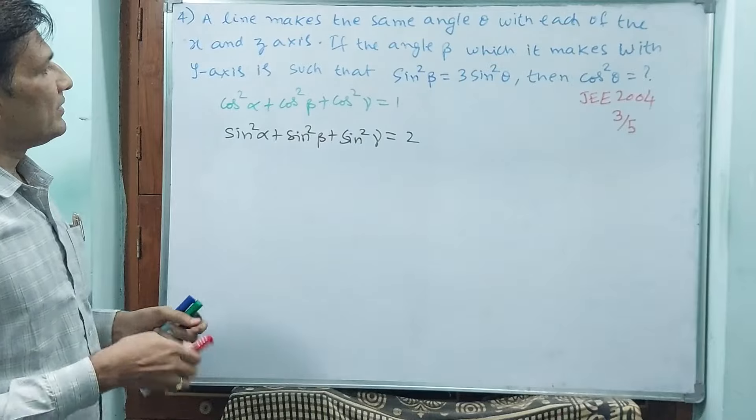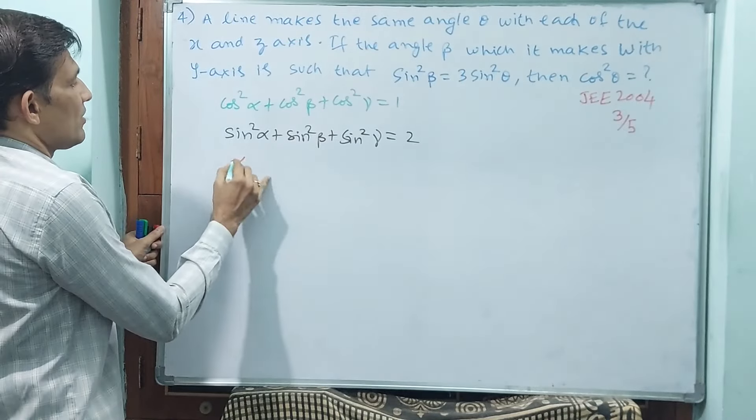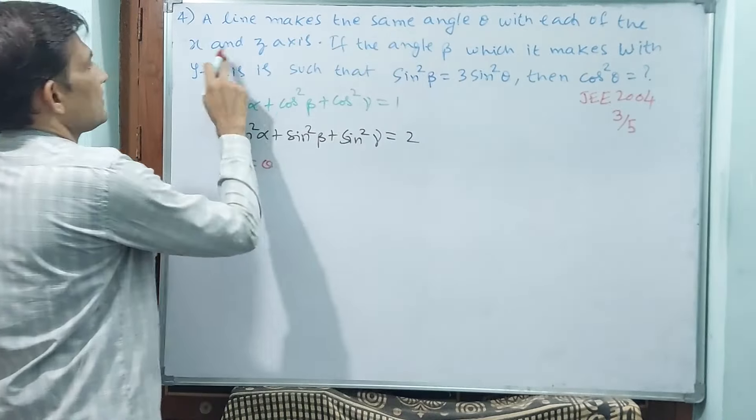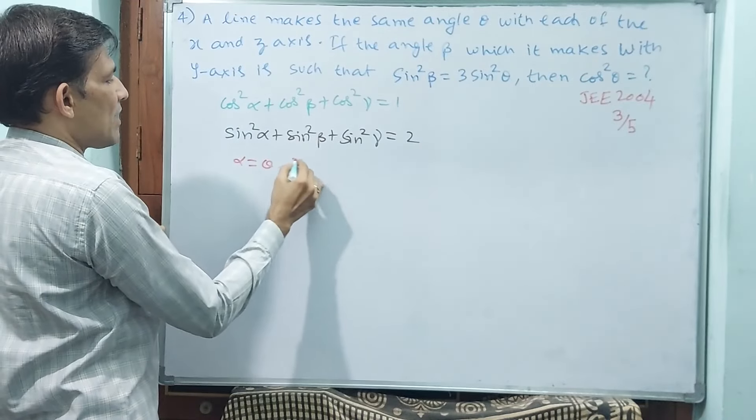Then you see here, alpha is equal to theta with x axis and z axis also. That means gamma also theta.